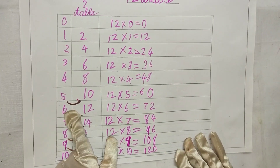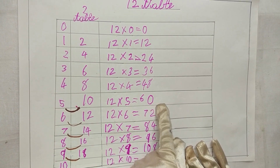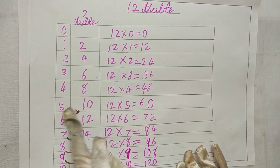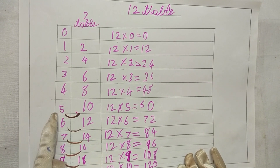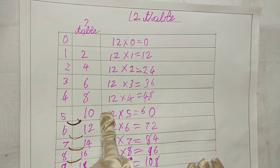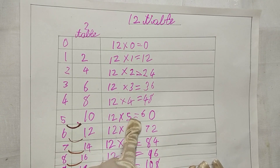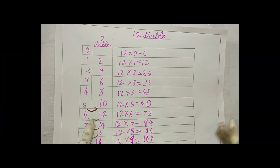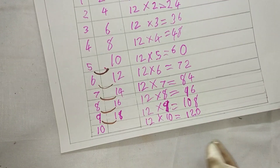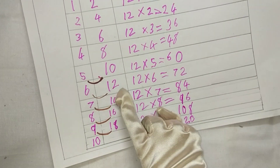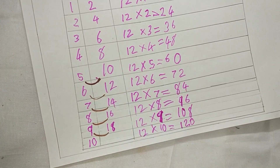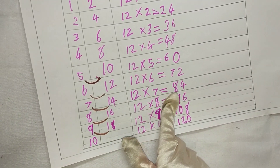Now that it came to 2 digits, we should first write the last number — write the 0 from the 10, then count down the numbers: 5 plus 1 is 6, so 12 into 5 is 60. 12 into 6 is 72 — I'm taking the 2 from the 12 and writing it here.